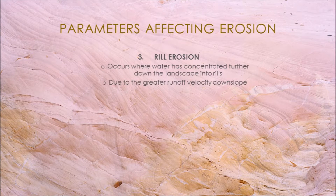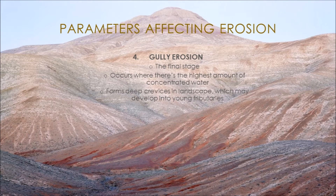As erosion continues, the water concentrates at the lower areas of the landscape. Rill erosion occurs where the increased runoff removes soil, running through little streamlets, while other areas experience little to no erosion. These rills can form gullies over time — essentially a larger, deeper version where large amounts of water and soil particles move through. In some cases, this can form the beginnings of a river system.